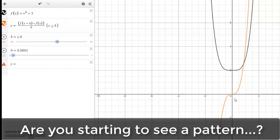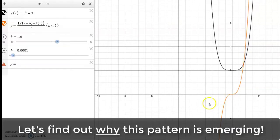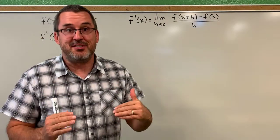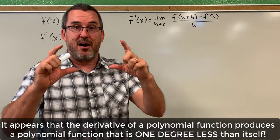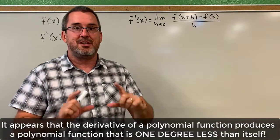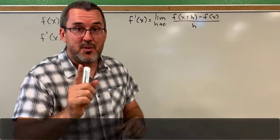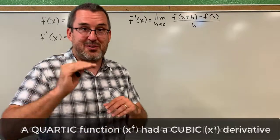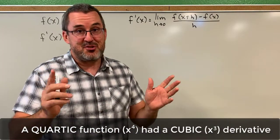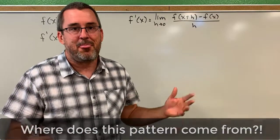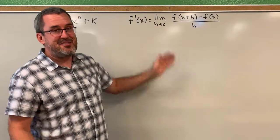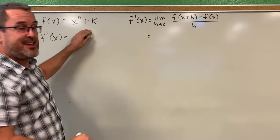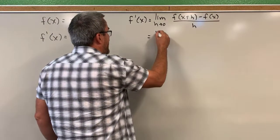There's something going on here. The derivative of a polynomial function produces a function that is one degree less than the function itself. The derivative of a quadratic was linear, a cubic was quadratic, a quartic was cubic. That pattern is true — we saw it happen — but why? Where does that come from? We're going to find out by going back to the limit definition of the derivative, applying it to x^n + k.